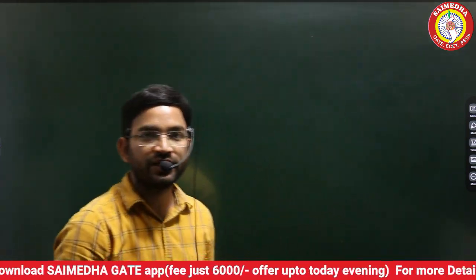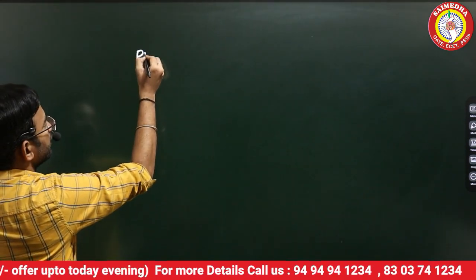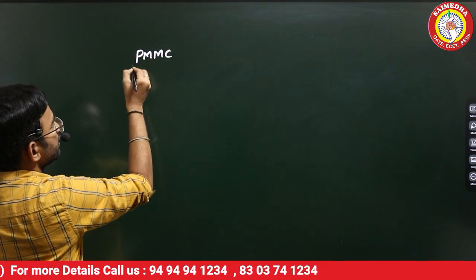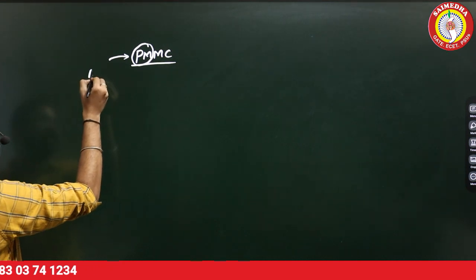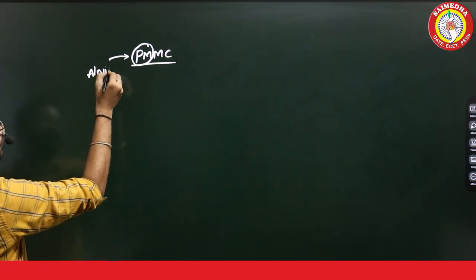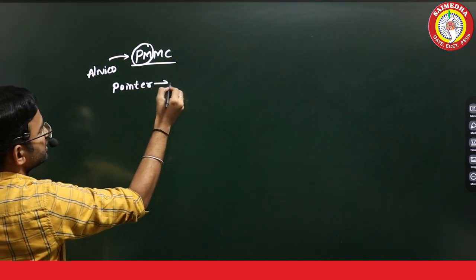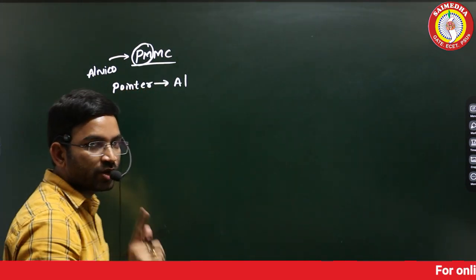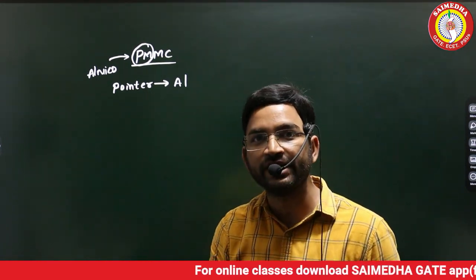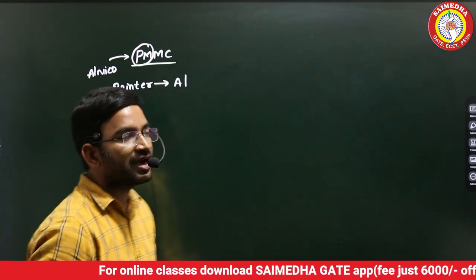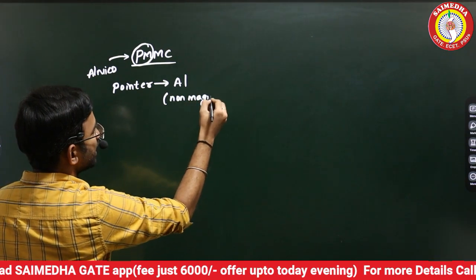This is the most repeated question. Whether it is JENCO or TRANSCO, these questions repeat a lot. Important points in PMMC: Permanent magnets are made with Alnico material. The pointer is made with aluminum — it is a non-magnetic material.